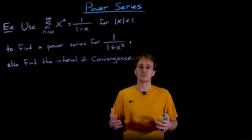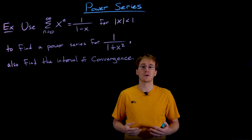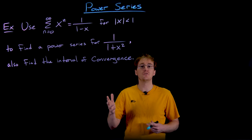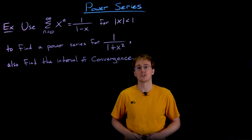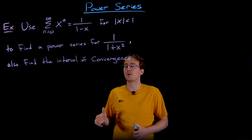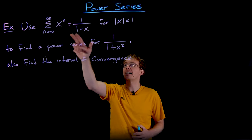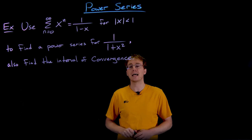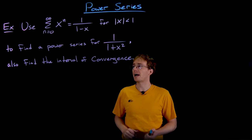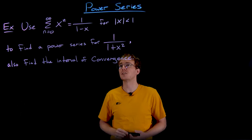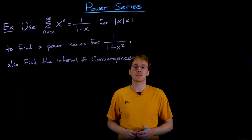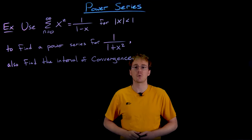Later we'll discuss building power series from scratch using Taylor or Maclaurin series, but often we can find a power series for a new function by manipulating a known one. In this example, we'll use the geometric power series — the sum from n equals 0 to infinity of x to the n, which converges to 1/(1−x) on the interval |x| < 1 — to create a power series for 1/(1+x²).